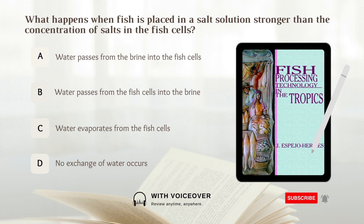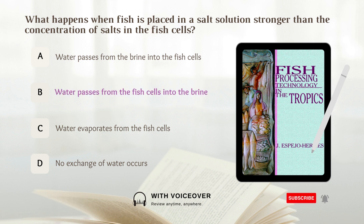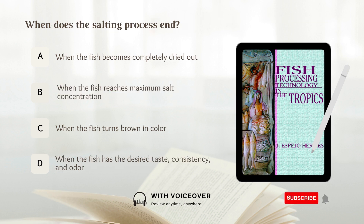What happens when fish is placed in a salt solution stronger than the concentration of salts in the fish cells? Answer: B. Water passes from the fish cells into the brine until the two solutions are of equal strength.